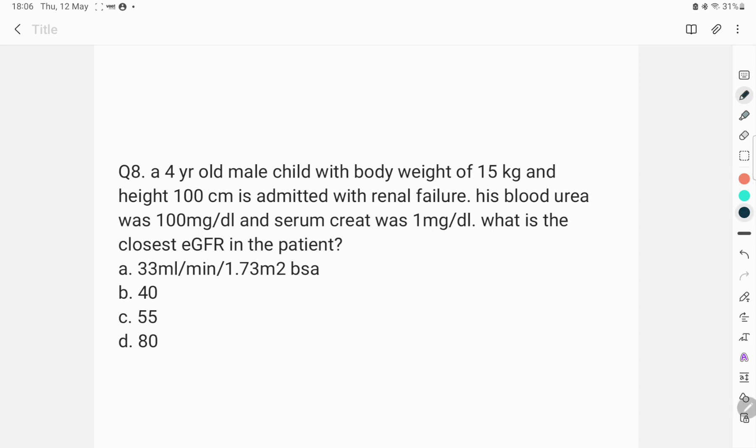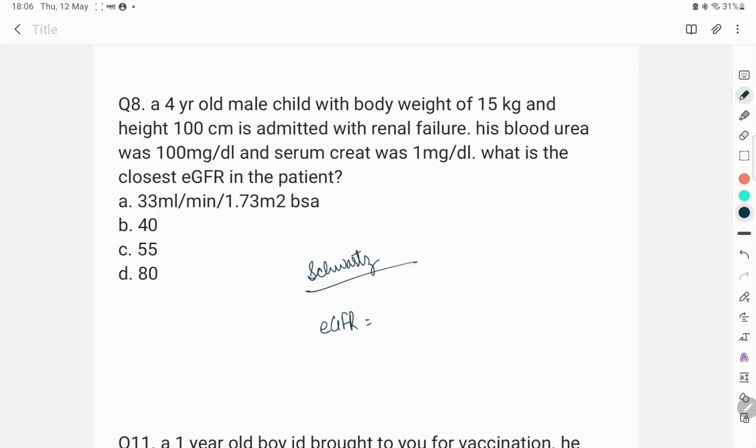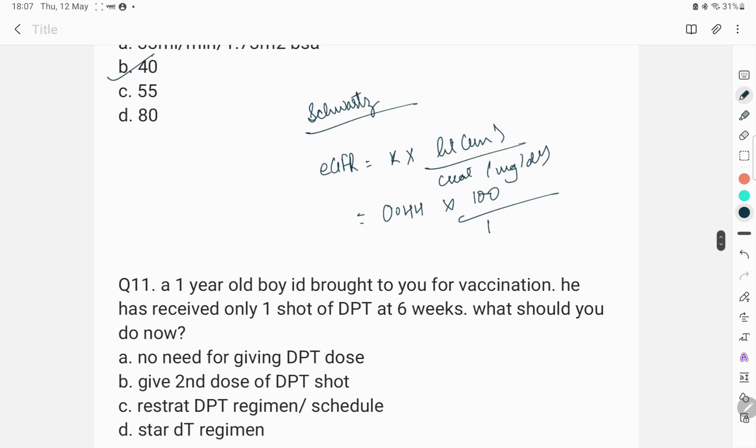The other question was on calculating the eGFR. A 4-year-old male child with body weight of 15 kg and height 100 cm is admitted with renal failure. His blood urea was 100 mg per deciliter and the serum creatinine was 1 mg per deciliter. What is the closest eGFR in this patient? We calculate eGFR based on Schwartz formula that is given in OP Ghai as well as your Nelson. The Schwartz formula says that eGFR equals K that is constant into height in centimeter divided by serum creatinine in milligram by deciliter. K constant value is 0.44. Height of the child is 100. Creatinine is 1. So, the answer to this question is closest is 40 ml per minute per 1.73 meter square body surface area.